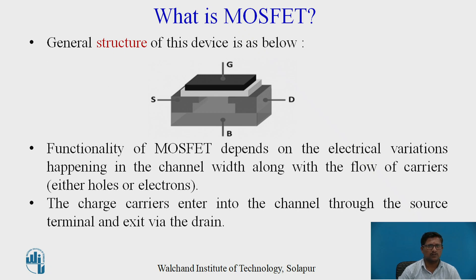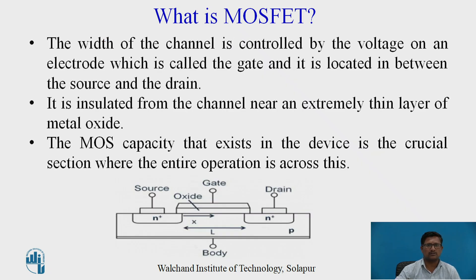The general structure of the MOSFET: functionally, MOSFET operation depends on electrical variations in the channel width along with the flow of carriers — either holes or electrons. The charge carriers enter into the channel through the source terminal and exit via the drain. With a P-type substrate, this is an NMOS device, and the channel exists between source and drain. The length of the channel is represented by L, and the width is controlled by the voltage at the gate. The gate is located between source and drain and is insulated from the channel by an extremely thin layer of metal oxide. The channel forms below the silicon oxide layer between drain and source, and its strength depends on the applied voltage at the gate terminal.